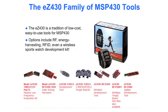There's a wide variety of EZ430 MSP430 tools. The EZ430 toolset has a tradition of low cost, easy to use tools on the MSP430. Options include RF, energy harvesting, RFID, and even a wireless sports watch called the Kronos. There are a number of EZ430 kits: a passive low frequency evaluation kit, a solar energy harvester, and the F2013 development tool for a very small, very low cost MSP430. There's also a wireless development tool with the EZ430 RF2500 and the 2500T.